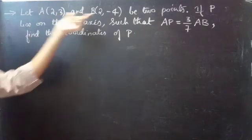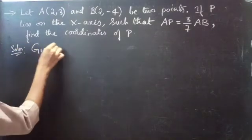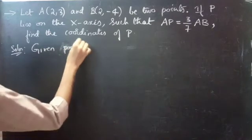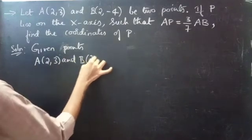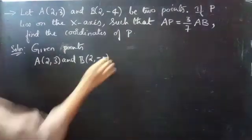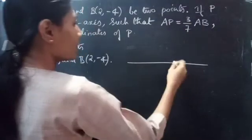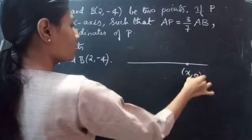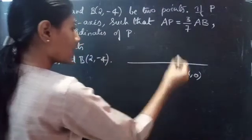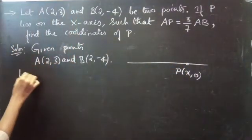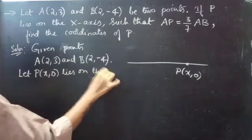So here we are given two points A and B. Solution: given points A(2, 3) and B(2, -4). If P lies on the x-axis, then the coordinates will be of the form (x, 0). So let P be (x, 0) lying on the x-axis.